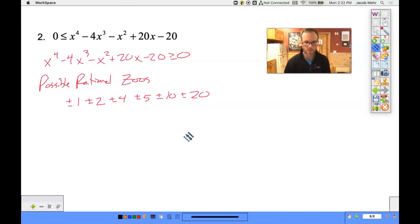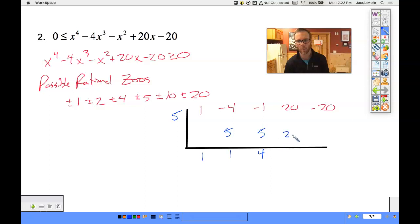I am going to start off with a positive. Let's go 1, negative 4, negative 1, 20, negative 20. I like to start mid-range here. I might start with like 5. Let's try 5 here. 1, 5, 1, 5, 4, 20, 40. Whoa, 200, 180. Whoa, 5 does not work. Didn't even get close.